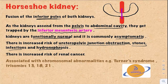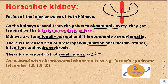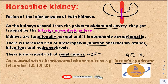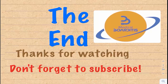There is also an increased risk of renal cancer, and this specific point is very important. Horseshoe kidney is associated with some chromosomal abnormalities, most commonly Turner's syndrome (45XO), and also trisomies 13, 18, and 21.